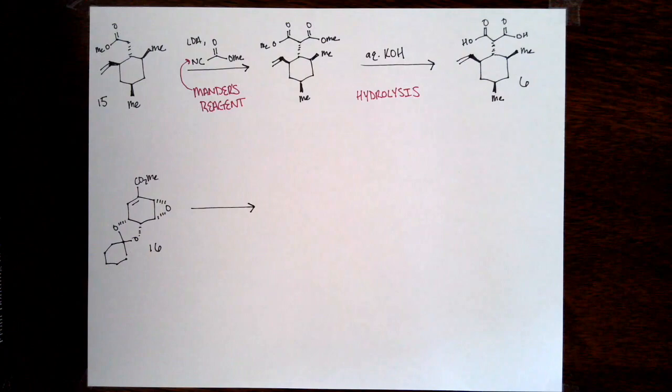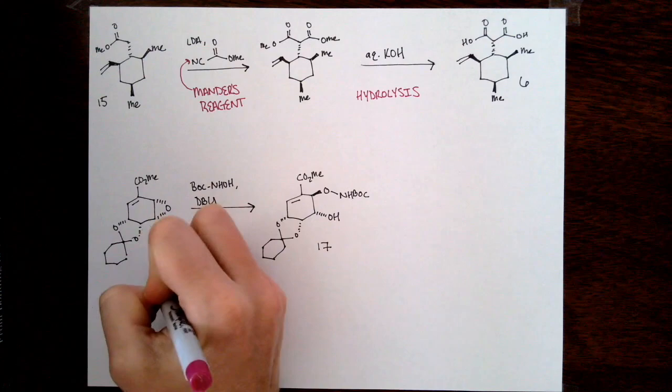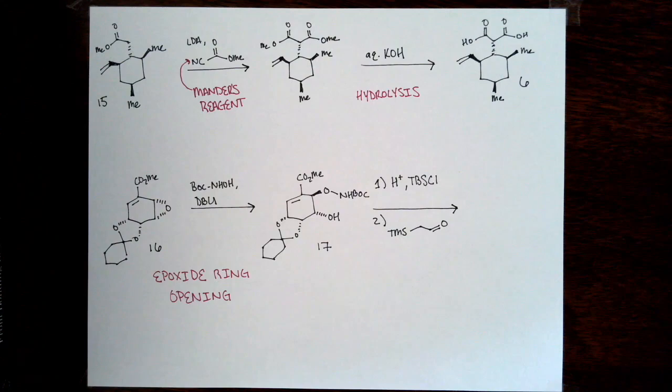How they make it is starting from shikimic acid, acetal protection, and then convert the free alcohol to a triflate, which then eliminates to a diene. From here they do a bromohydrination, which will add the bromine and the hydroxyl group trans across the alkene, which then goes on to form the epoxide, which is their starting material 16 for their synthesis.